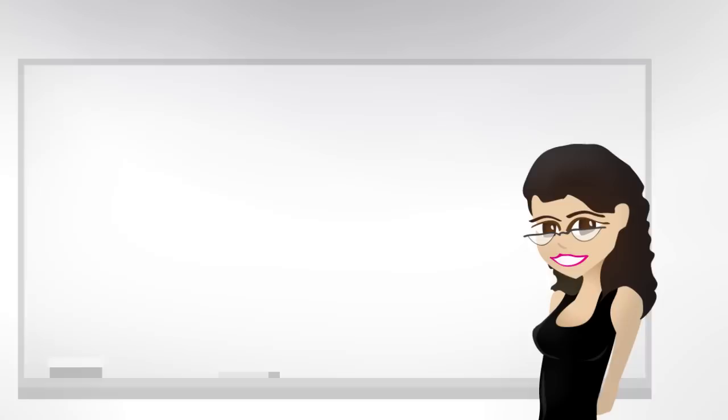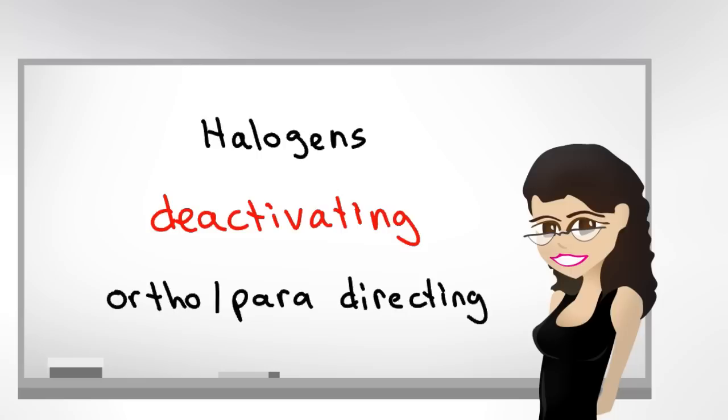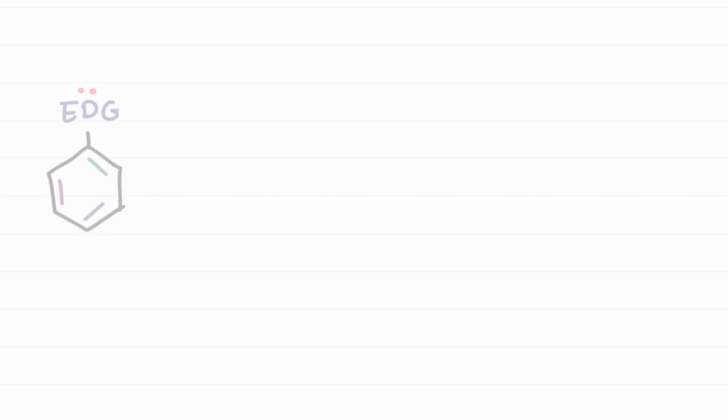Leah here from Leah4Sci.com and in this video, I will help you understand why halogens are an exception to the EAS rule given that they're deactivating yet are still ortho-paradirecting.